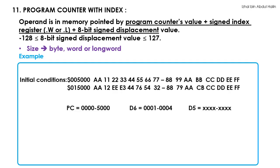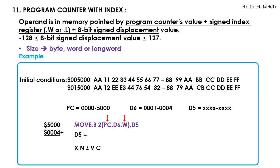Now for an example. Two 16-byte blocks of memory content is shown here — the first starts at address 5000 and the second starts at address 15000. Initially, the program counter's value is 5000. Data register D6 is 10000 and 4, and D5 contents are unknown. The instruction in this example is MOVE.B 2(PC, D6.W), D5. The destination operand is D5 and the source operand's address will be calculated using the 8-bit signed displacement value, the program counter's value, and the value in register D6. Upon execution, 5000 which is the program counter's value and the word-length value in D6 are added — we have 5000 plus 4 equals 5004. The 8-bit signed displacement value which is 2 is added to this result, giving us the operand address of 5006.